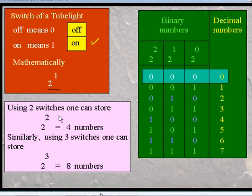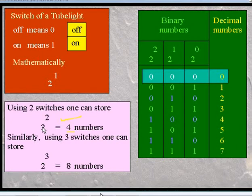We can extend this concept for two switches, three switches, and so on. See the second diagram here: 2 raised to power 2 is equal to 4 numbers. The base 2 denotes the binary number system and the power 2 denotes 2 switches. So 2 raised to power 2 equals 4.